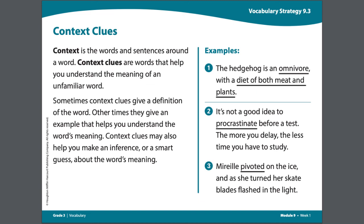Now that you've taken some time to look through this sentence for context clues, let's talk about it. After the word pivoted in this sentence, we continue on and read: as she turned, her skate blades flashed in the light. The word pivoted must mean to turn, because we see twice a movement that she does — once is the action she pivoted, and the second is that she turned. Both of these are connected in this sentence, so they must be synonyms for one another. This helped us understand what the word pivoted means.